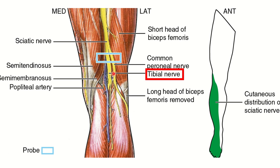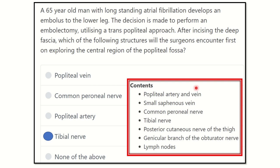The tibial nerve lies most superficially, then the popliteal vein, then the popliteal artery. The popliteal artery is the deepest structure, meaning it is very close to the bone. So our answer is that the tibial nerve lies most superficially in the central region of the popliteal fossa.